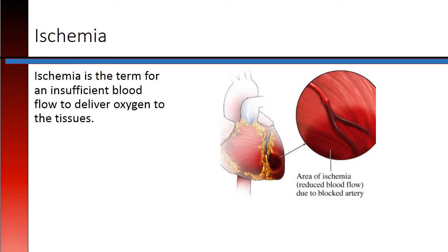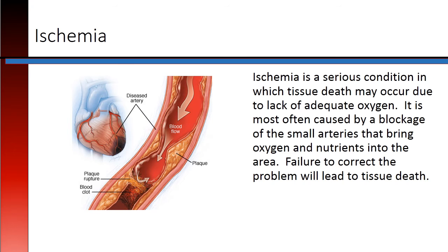Ischemia is the term for an insufficient blood flow to deliver oxygen to the tissues. It is a serious condition in which tissue death may occur due to lack of adequate oxygen, most often caused by a blockage of the small arteries that bring oxygen and nutrients into the area. Failure to correct this problem will lead to tissue death.